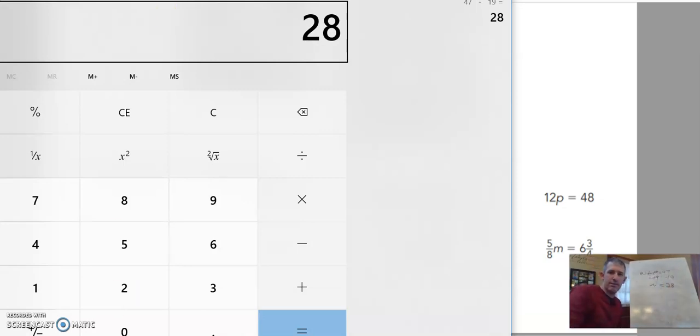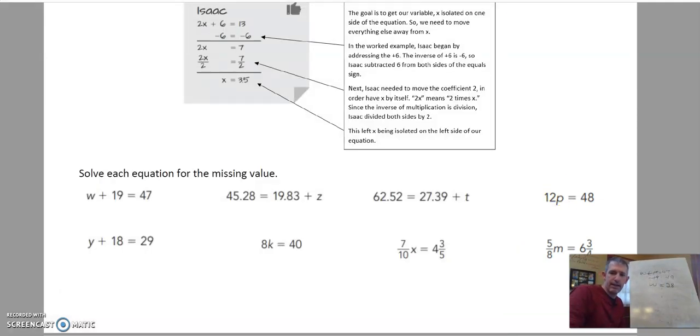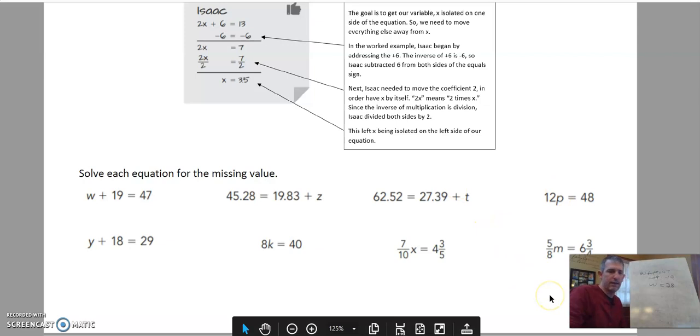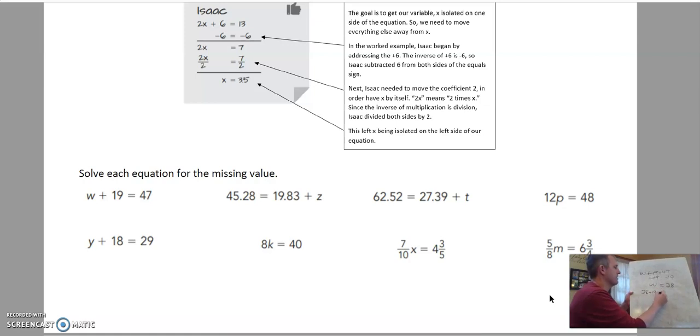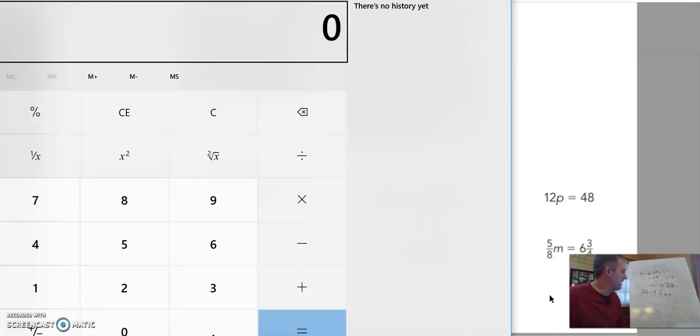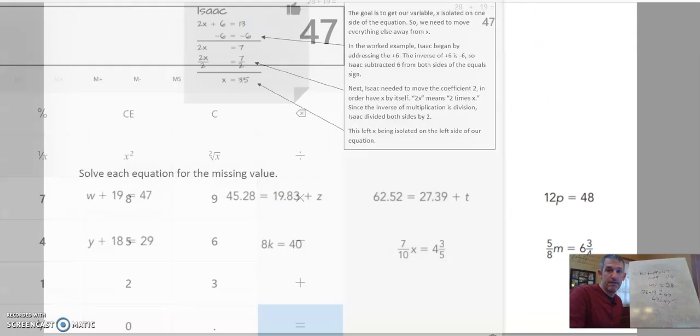Now I could check to see if I'm right by substituting in, kind of like we did in this section above. I could try by putting 28 plus 19 and ask the question, does it equal 47? You got 28 plus 19 and it does equal 47. So what we just did there is we checked our answer to see if we're right, and it works. So we're in good shape.